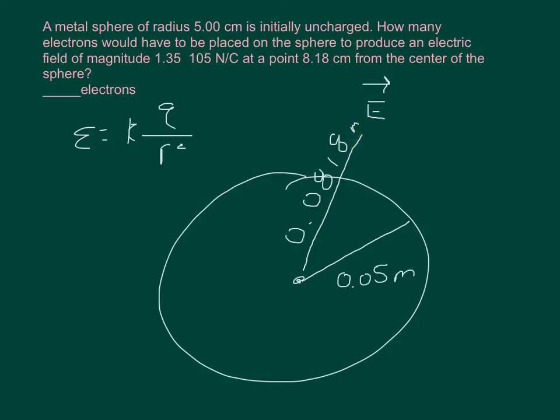So r in our equation is going to be equal to 0.0818 meters. But we want to figure out what charge do we need, because a certain number of electrons is what we want to get to, but electrons give us the charge. So we'll solve for the charge and it's going to be E times r squared divided by Coulomb's constant equals the charge.